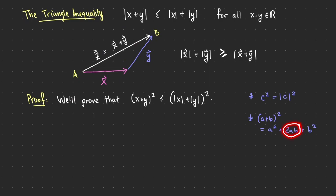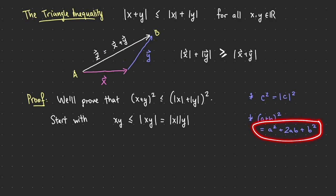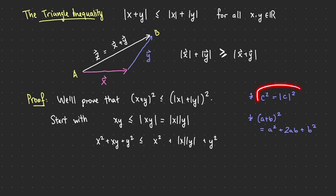Start with the cross term: x times y. Any real number is less than or equal to its own absolute value, so xy ≤ |xy| = |x||y|. Adding x² and y² to both sides gives x² + xy + y² ≤ x² + |x||y| + y². Using the fact that c² = |c|², I can insert absolute values around x² and y² without changing anything.